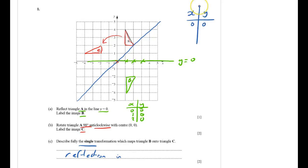0, 0 is on it. 1, 1 is on it. 2, 2 is on it. And every single one, y value is the same as the x value. So that's the equation of the line. Reflection in y equals x.